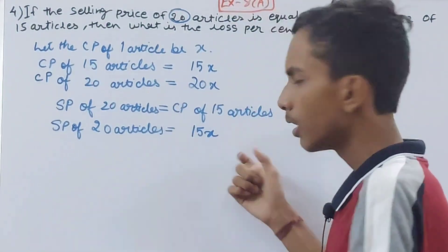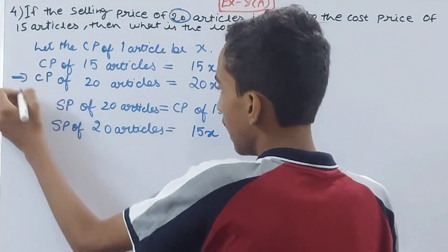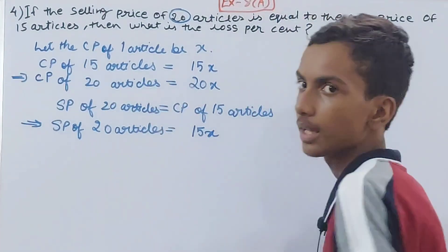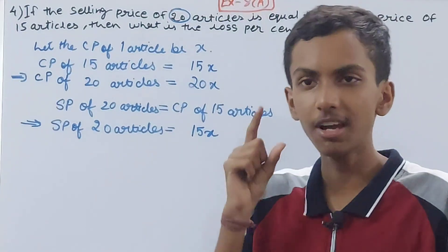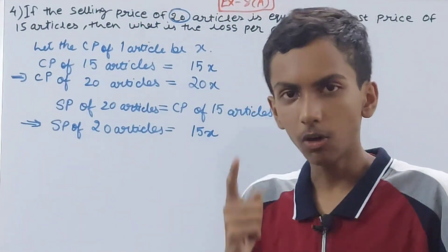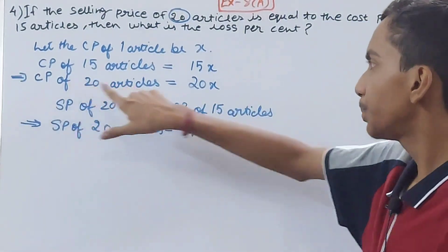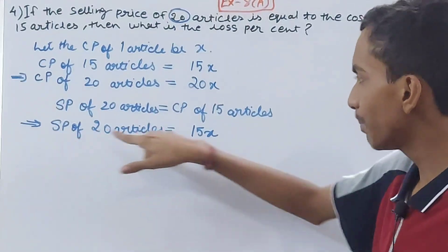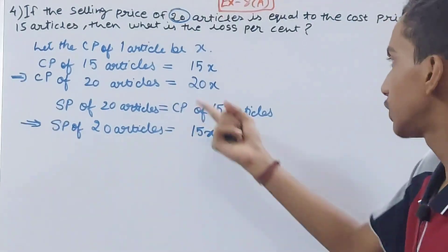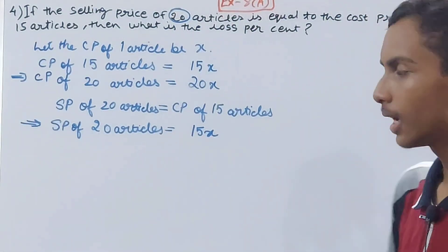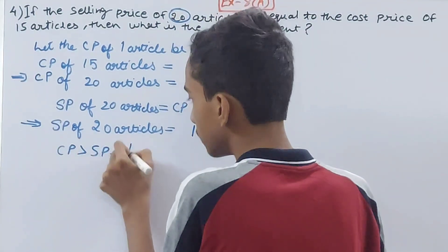Now compare — this is why we took out the cost price and selling price of 20 articles. Even though we did not need the cost price of 20 articles directly from the question, we took it out because we want to compare cost price and selling price of the same number of articles. So cost price of 20 articles is 20x, and selling price of 20 articles is 15x. Since 20x is greater than 15x, cost price is greater than selling price — so there is a loss.